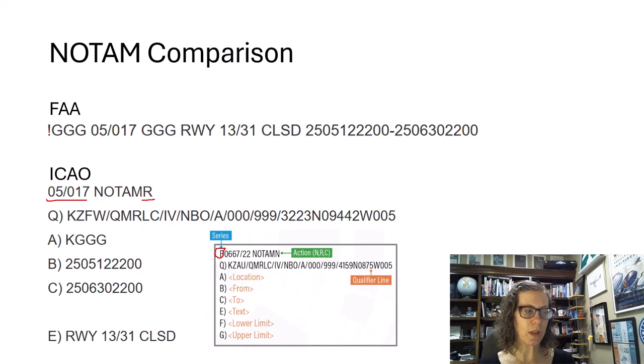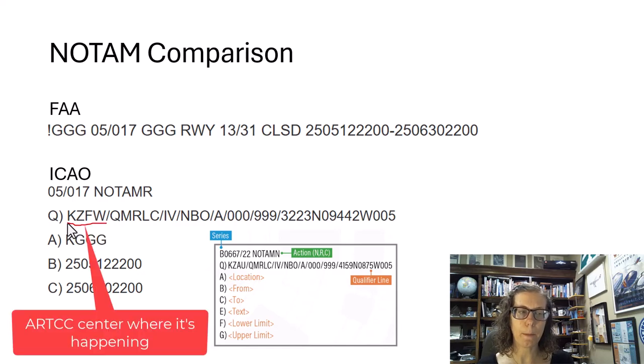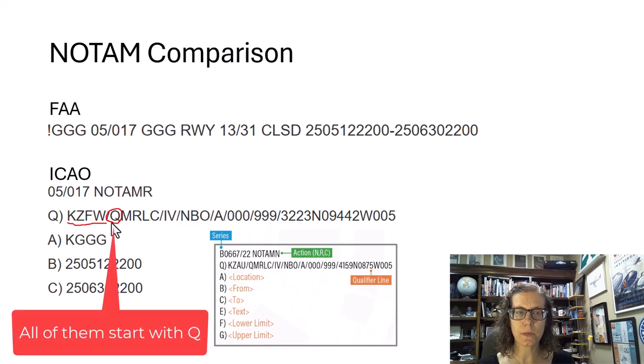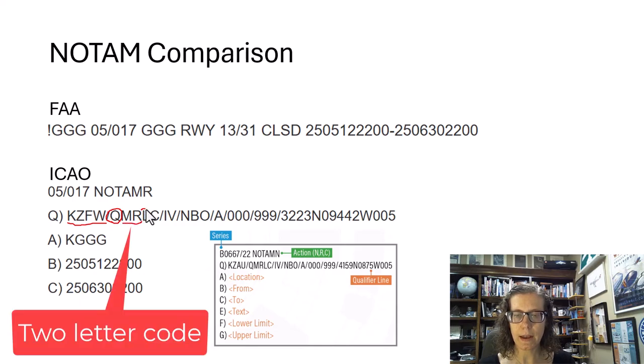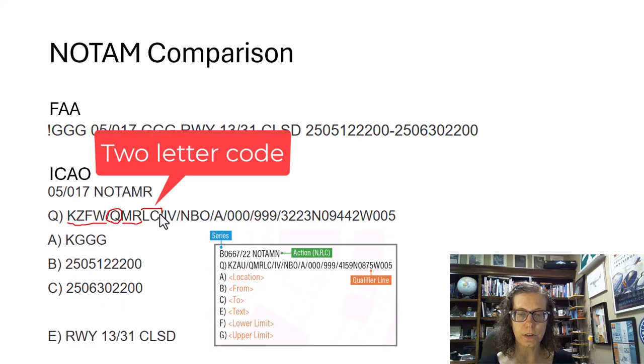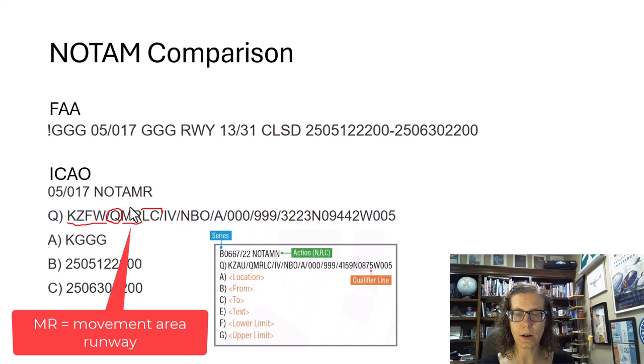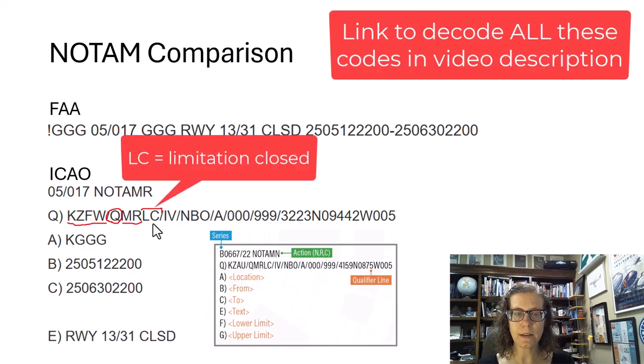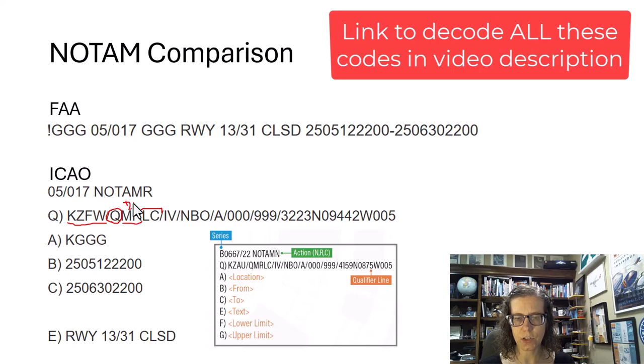We do have the action, so this is a revision of a previous NOTAM. Let me break down the Q line for you guys because this is where it gets a little weird. We have ZFW so it came from ARTCC of Fort Worth Center. I do not know why but all of the Q section starts with Q. Then you have a two-letter code and another two-letter code. The second and third letters MR in this one means it's for a movement area runway. And then LC means it is a limitation and it's closed.